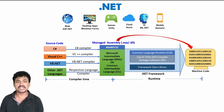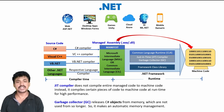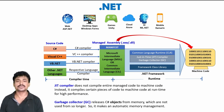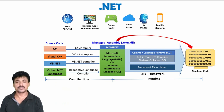The JIT compiler compiles managed code into machine code. However, it does not compile the entire managed code into machine code at once — it compiles only a certain portion of the managed code into machine code as needed.